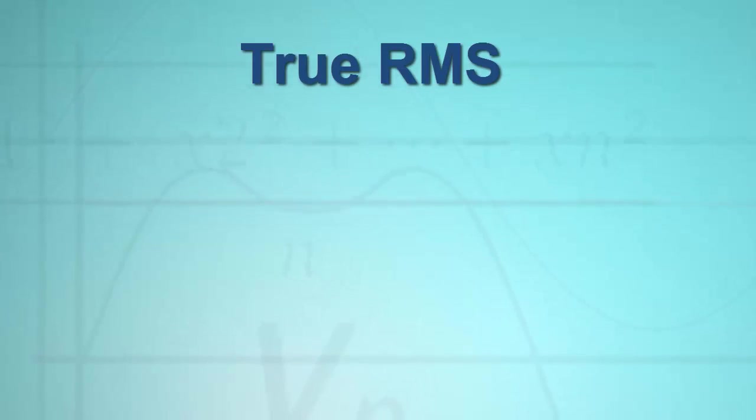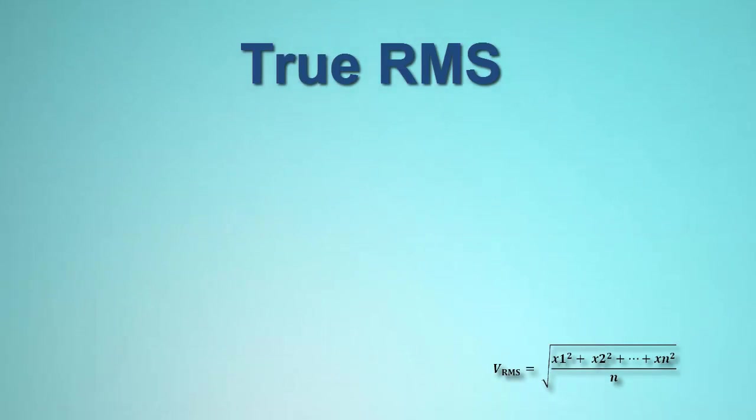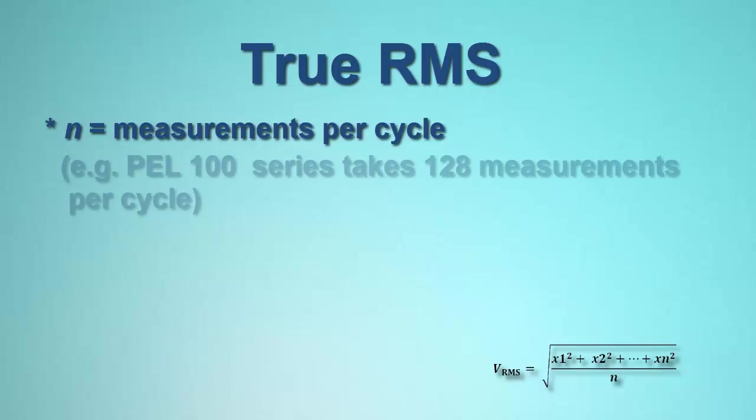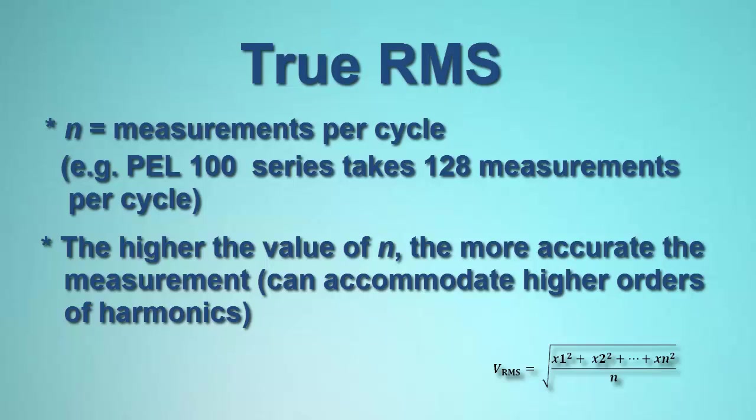This involves a more generalized mathematical calculation that takes into consideration all irregularities and asymmetries that may be present in the AC waveform. In this equation, n equals the number of measurements made during one complete cycle of the waveform. For AEMC instruments, this is always a multiple of two. The higher this number is, the more accurate the RMS calculation will be. This is because the higher the value of n, the higher the order of harmonics this formula can accommodate.